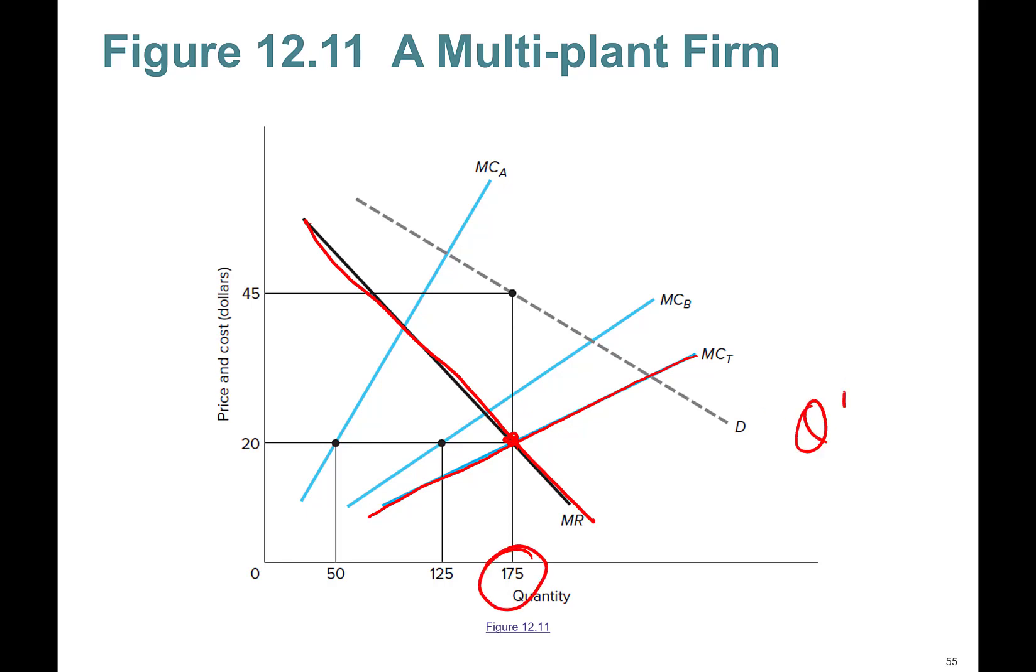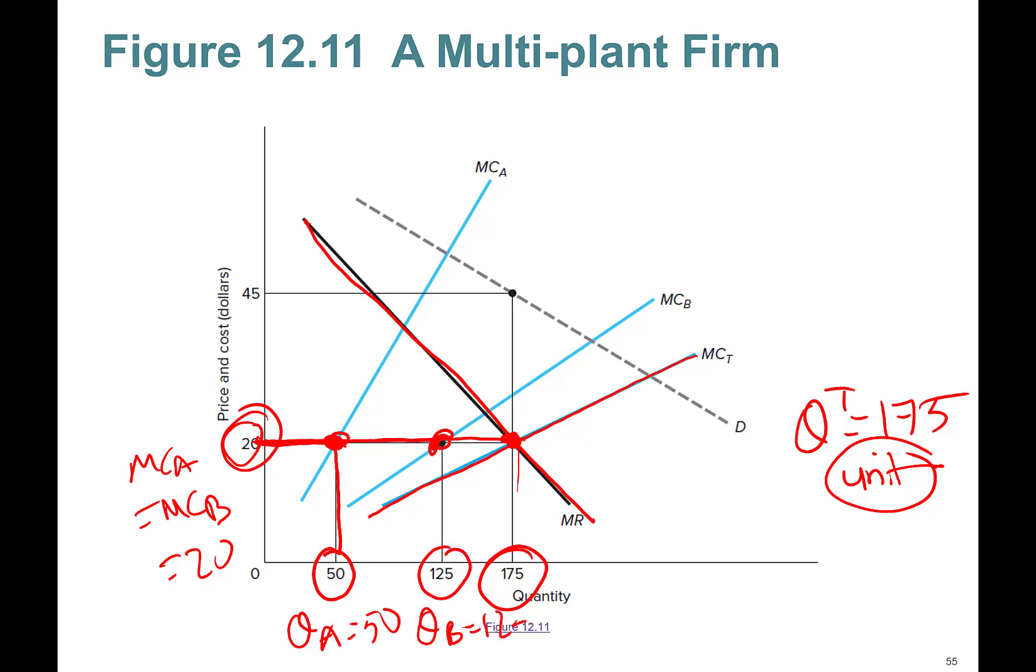Marginal revenue equals marginal cost. I need to produce a total quantity of 175 units. How am I going to produce these units between different factories? At 175 units, the cost is $20. Then at this $20 marginal cost level, MC_A equals MC_B equals $20. Go to the marginal cost of the first factory - you're going to produce Q_A of 50 units. Go to the second factory plant, so Q_B is going to be 125. Total is going to be 175.